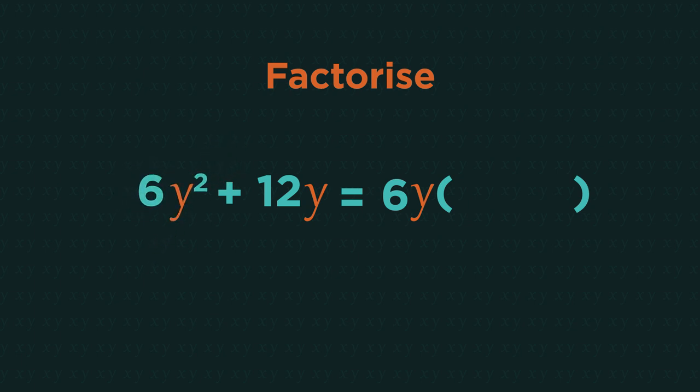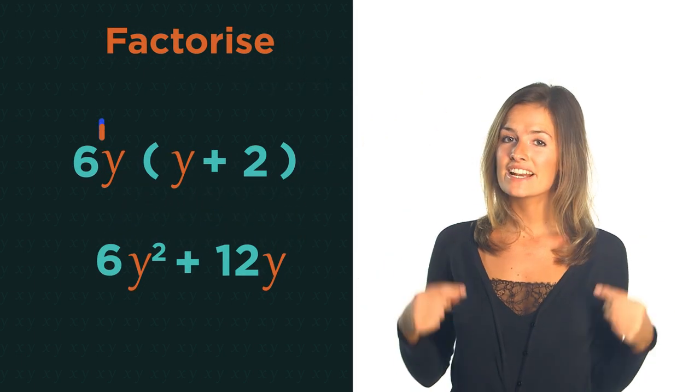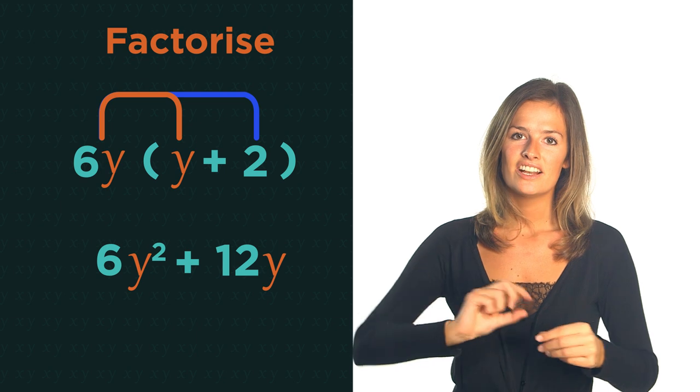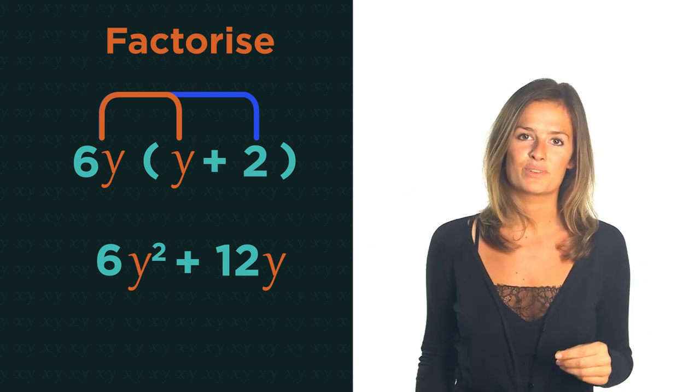Just y, so put that inside the bracket. And what do we need to multiply 6y by to get 12y? 2, so plus 2 inside the bracket. It's really important to check our answer, so just expand the bracket to double check ourselves.